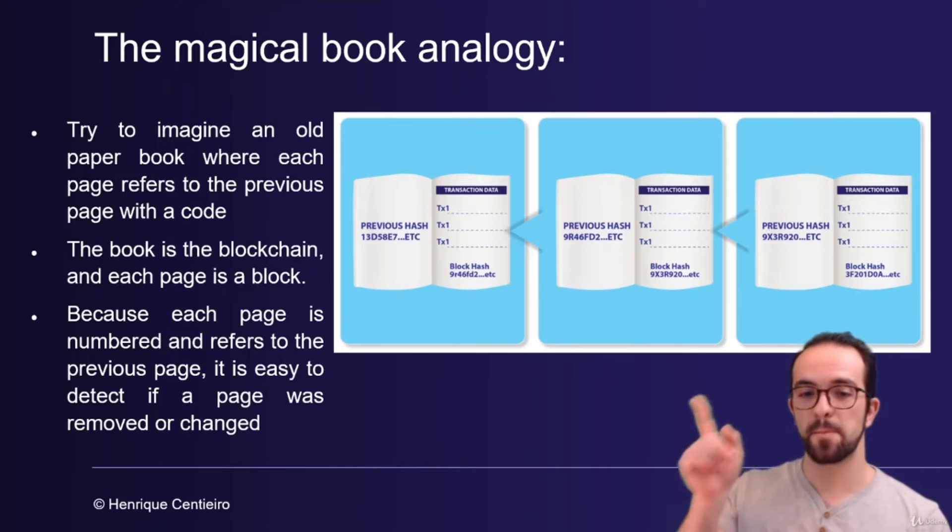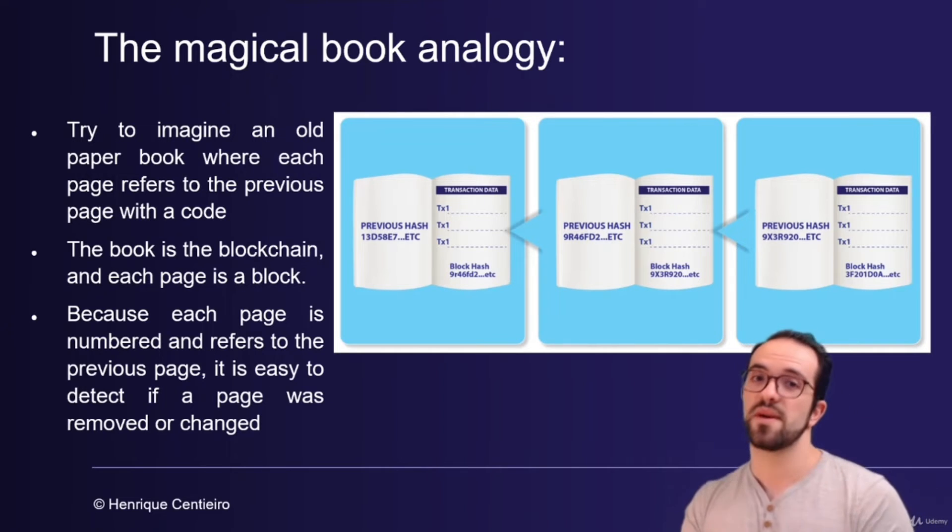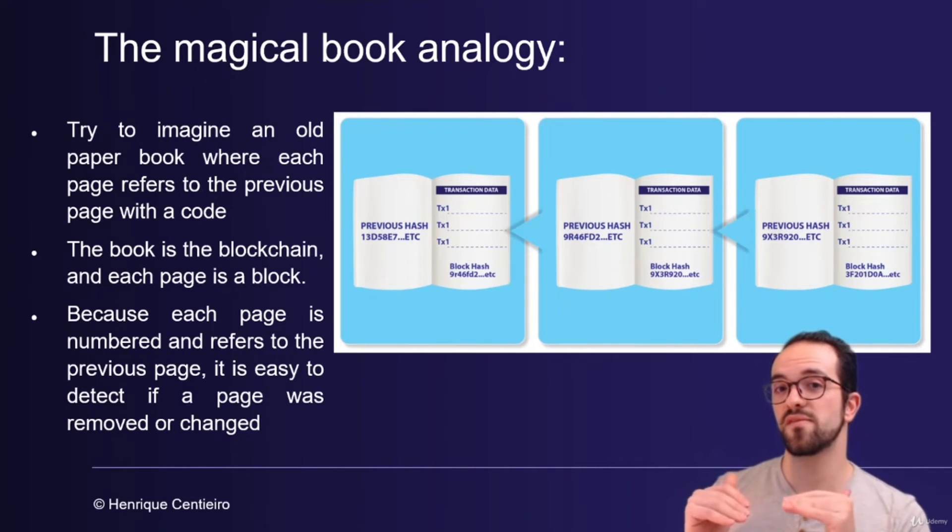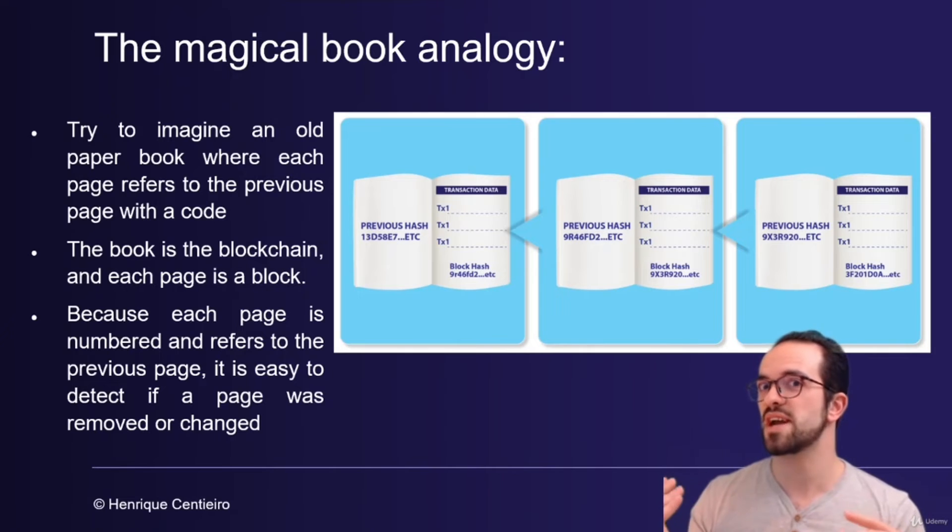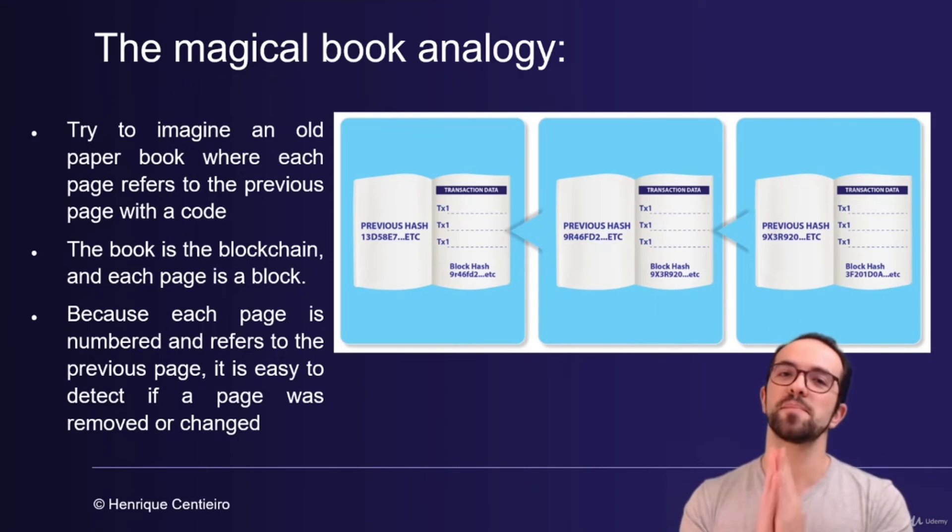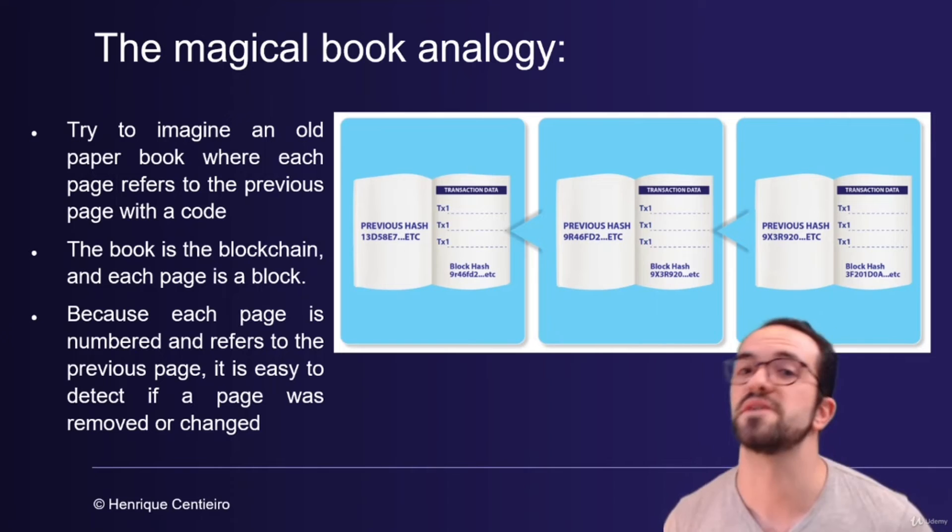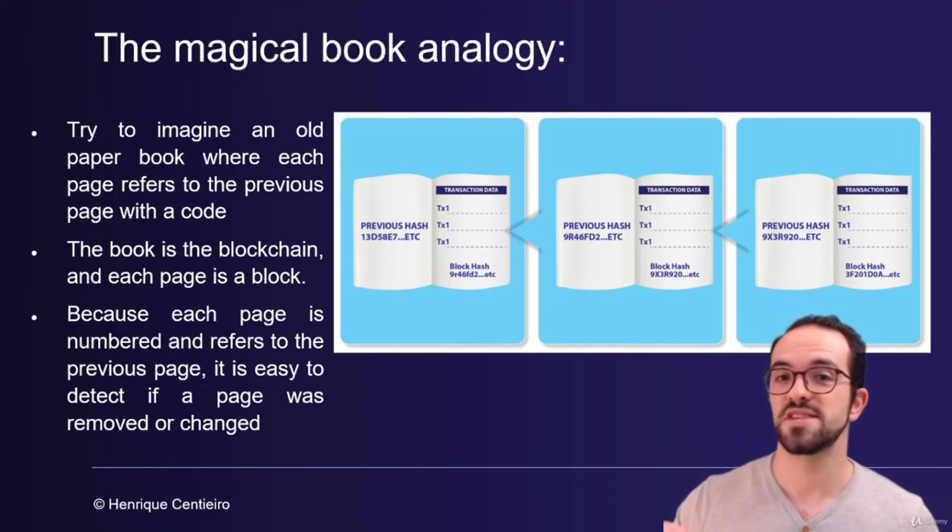So let's take a look at this magical book analogy. You can see this as an old paper book where each page refers to the previous page with a code. And the book is the blockchain and each page is a block. Each line in the page of the book is a blockchain transaction or an NFT or a smart contract. Because each page is numbered and refers to the previous page, it is easy to detect if a page was removed or altered.